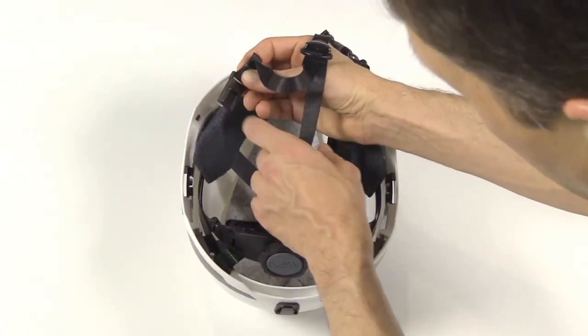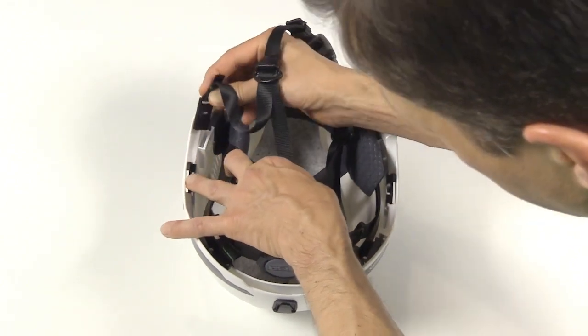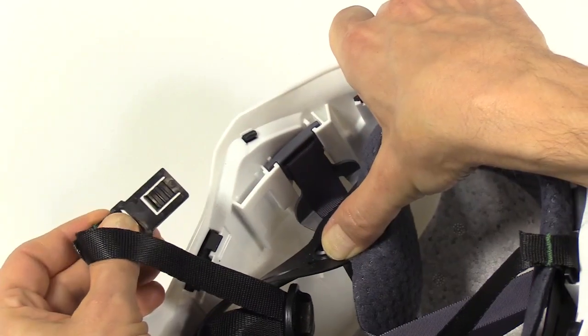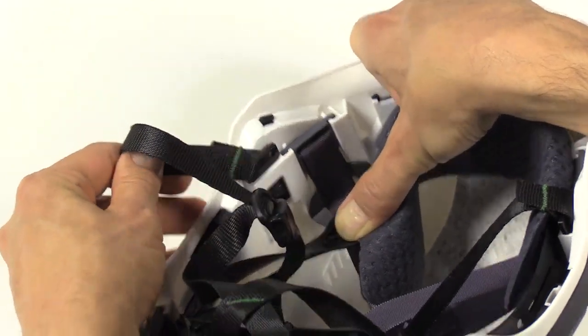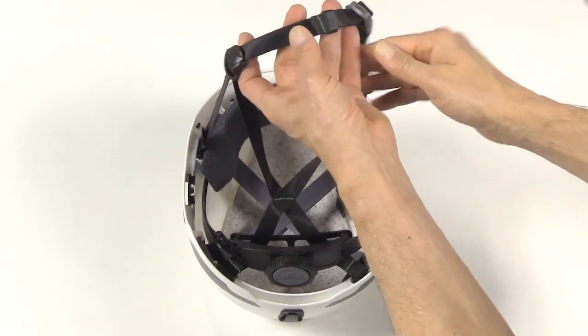And then, front of the clip should face the interior of the shell and click in. Chin strap should remain flat.